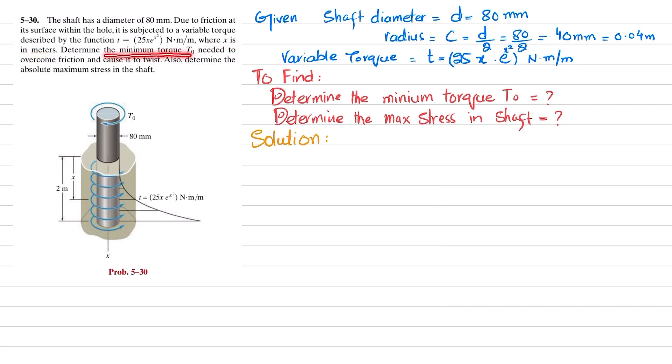Determine the minimum torque T₀ needed to overcome friction and cause it to twist. Also determine the absolute maximum stress in the shaft. You can see this is a shaft inserted into the hole. Due to the friction, the torque acting on it is given by this function. You have to find this torque T₀ that overcomes this friction and causes it to twist, and also find the maximum stress.